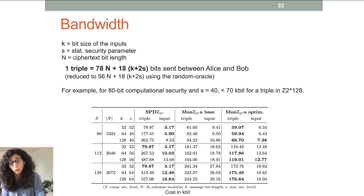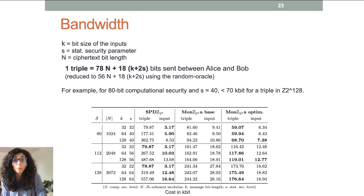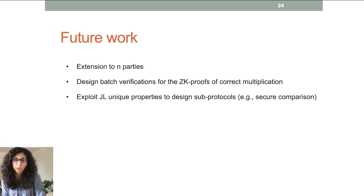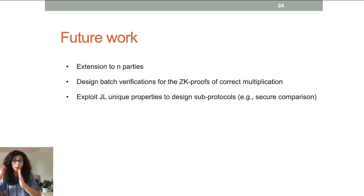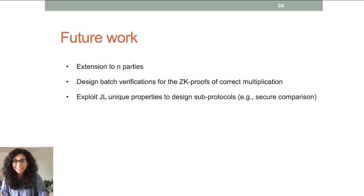Before concluding, there are interesting directions for future work. It would be nice to extend this protocol to the n-party case. Designing batch verification for the zero-knowledge proofs would also help, since many proofs are needed per triple. Additionally, for specific applications, one could design sub-protocols exploiting the unique properties of the Joye-Libert scheme. Thank you for watching, bye-bye.